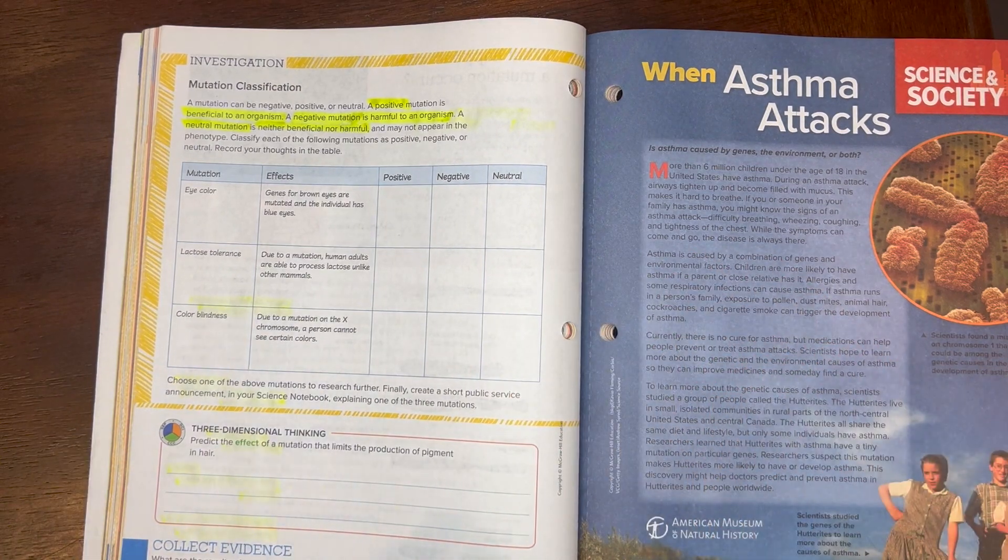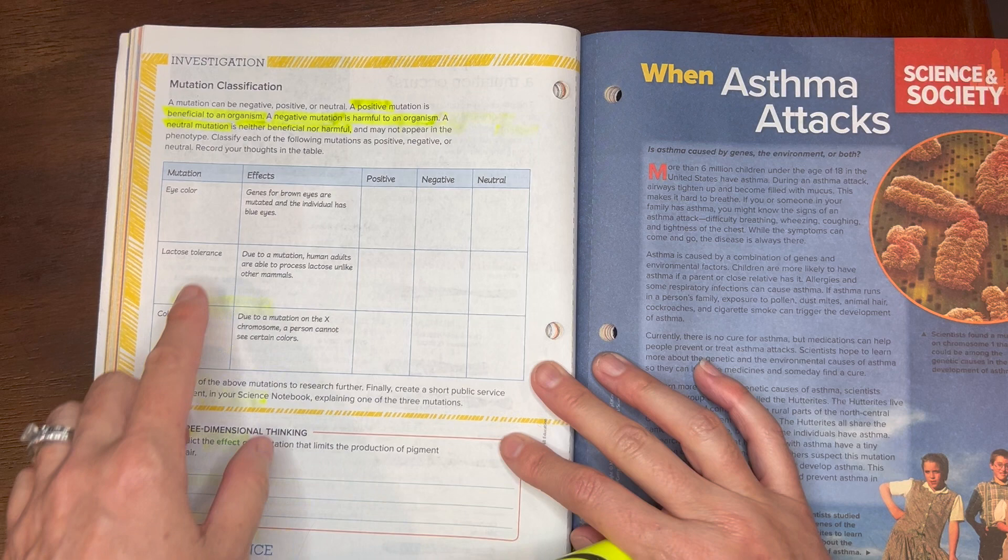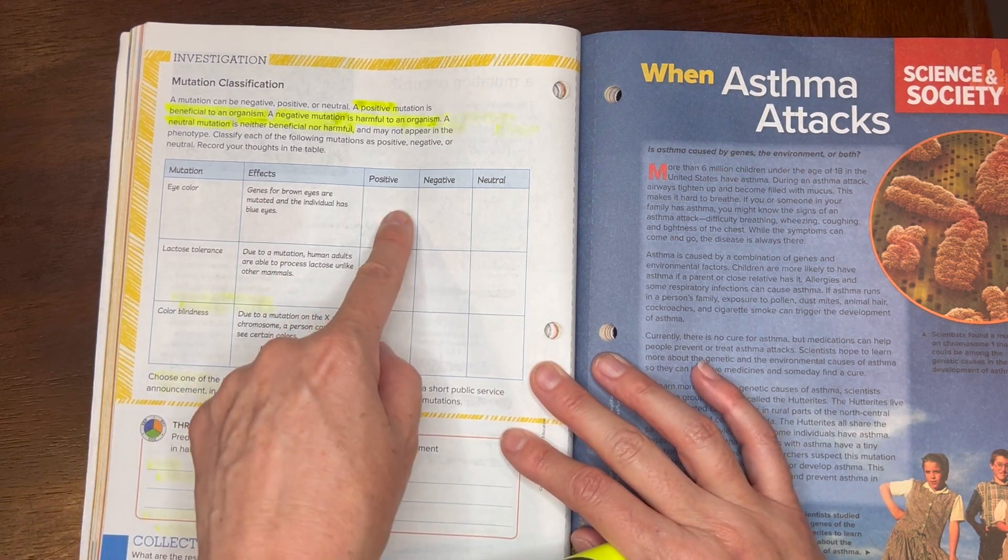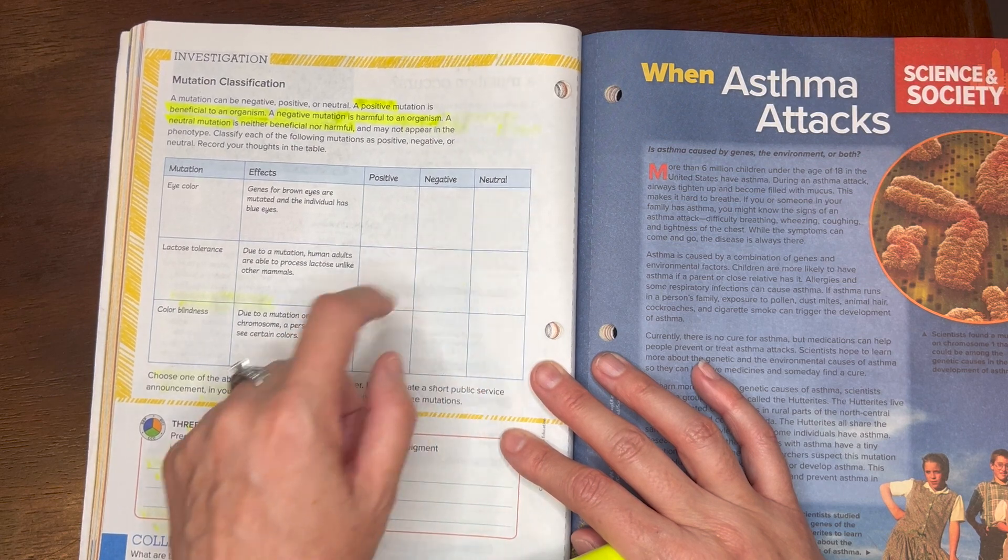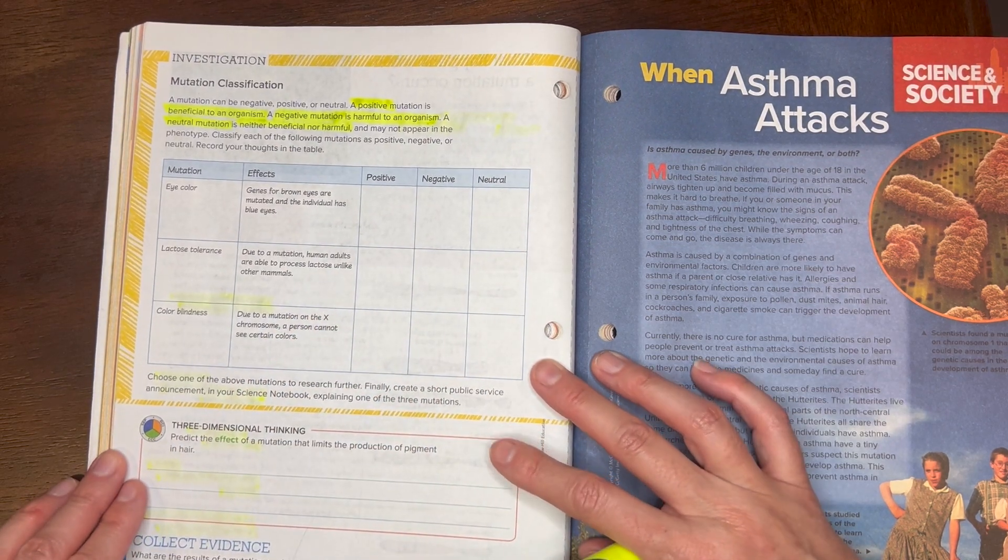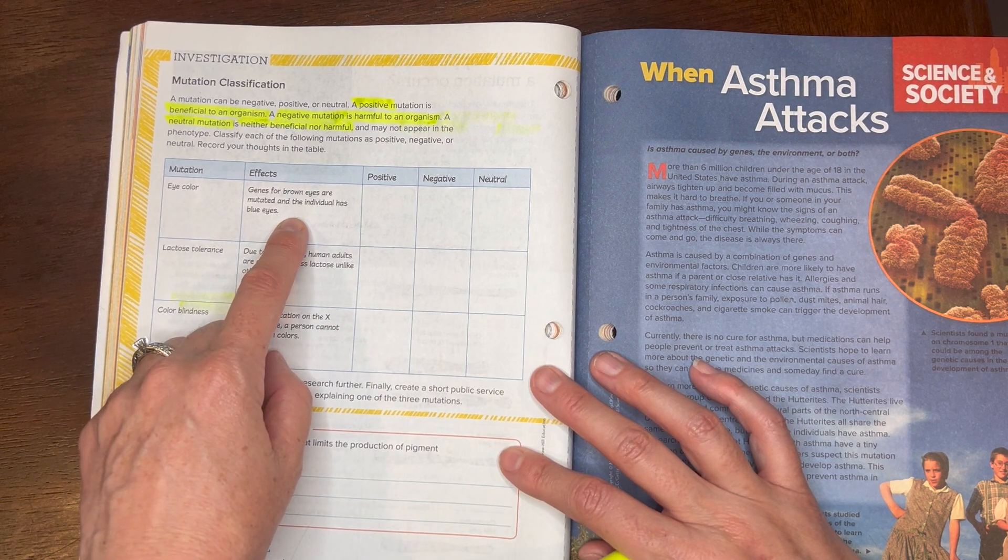So let's go ahead and look through these and you're going to mark over here if you think that it's positive, negative, or neutral, and then you're also going to write it in your notes. So eye color—even though genes for brown eyes mutate to blue eyes, is that going to be helpful, harmful, or doesn't really matter to an organism such as humans?